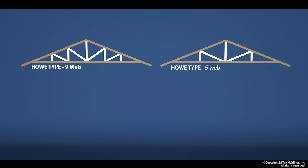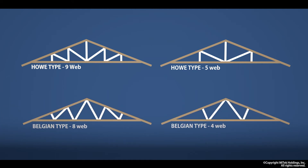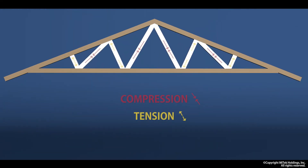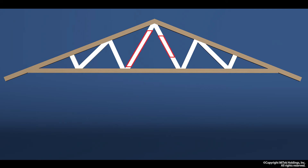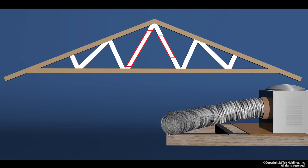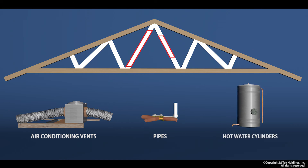The two most common patterns are the Howe type and the Belgium type. During loading of the trusses, the webs will inherit either a compression or a tension load, so it is essential that these members must not be interfered with. At times it can be common to see part or all of a web removed on site to accommodate internal obstructions such as air conditioning vents, pipes, or hot water cylinders. The best solution when confronted with this is to seek professional advice from either your truss designer or Mytech New Zealand.